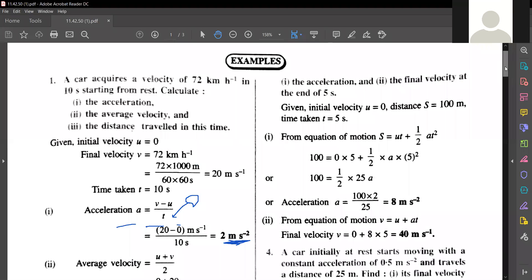Now we will use v equals to u plus at, but we don't have velocity. We have time taken, initial velocity is zero. So I've got two options here. First of all I should find the acceleration using the formula.